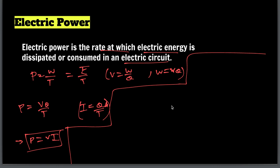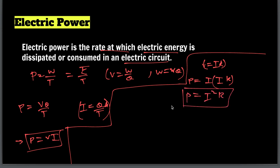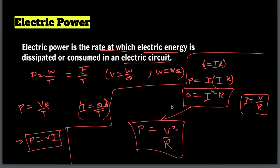Let's verify P = VI with other forms. We know V = IR from Ohm's law. So P = I × IR = I²R. Also, since I = V/R, we can write P = V × (V/R) = V²/R. So the three important forms are: P = VI, P = I²R, and P = V²/R.